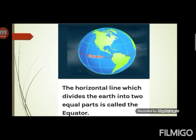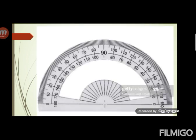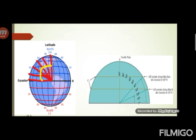Every line has a certain number. If I cut the equator into two equal parts, I will get a plane which looks like a protractor. We measure the angle with reference to its center. Similarly, we measure the angular distance of the earth through its center. You can see in the slide that from the center of the earth we have measured two angles — one of 20 degrees and the other of 40 degrees.